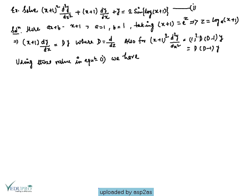Example: Solve (x+1)² d²y/dx² + (x+1) dy/dx + y = 2sin(log(x+1)). Comparing with the Legendre form ax+b, we identify a = 1 and b = 1.